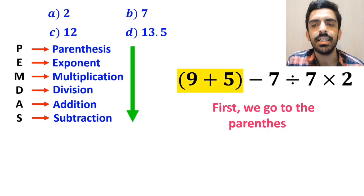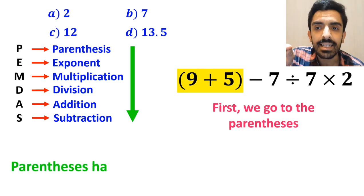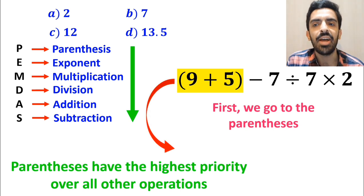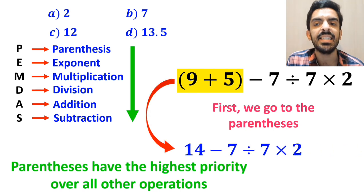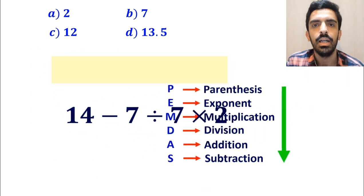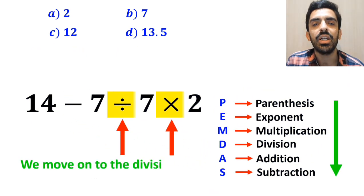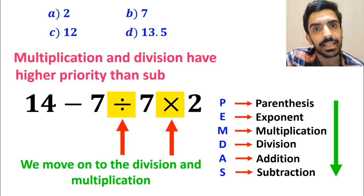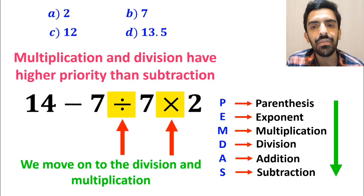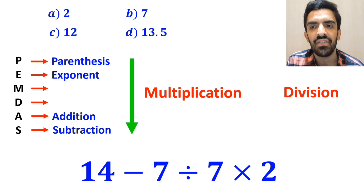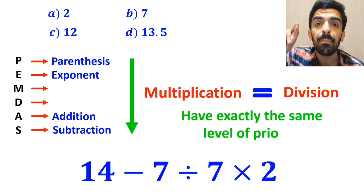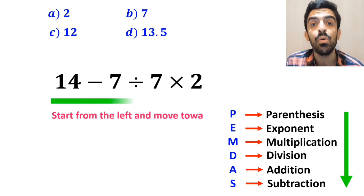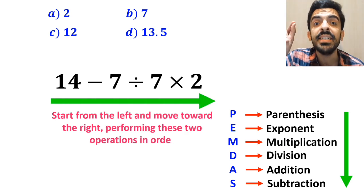First we go to the parentheses, because according to the PEMDAS rule, parentheses have the highest priority over all other operations. So we can write this expression as 14 minus 7, divided by 7 times 2. In the next step, we move on to the division and multiplication, because multiplication and division have higher priority than subtraction. However, it's very important to note that multiplication and division have exactly the same level of priority. In this situation, the best approach is to start from the left and move toward the right, performing these two operations in order.